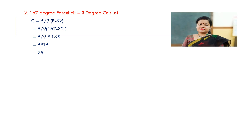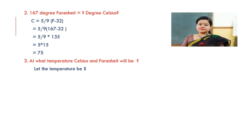Another interesting one: at what temperature will Celsius and Fahrenheit be equal? Let the temperature be X. We write the formula F = 9X/5 + 32. Since Celsius and Fahrenheit are both equal to X, we can write X = 9X/5 + 32. So in place of F we write X and now we do the simplification.